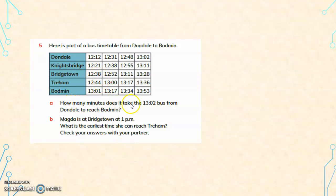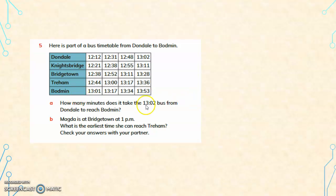How many minutes does it take the 13:02 bus from Dondal to reach Bodmin? The starting station is Dondal and from there it has to reach Bodmin. Look for the timetable.